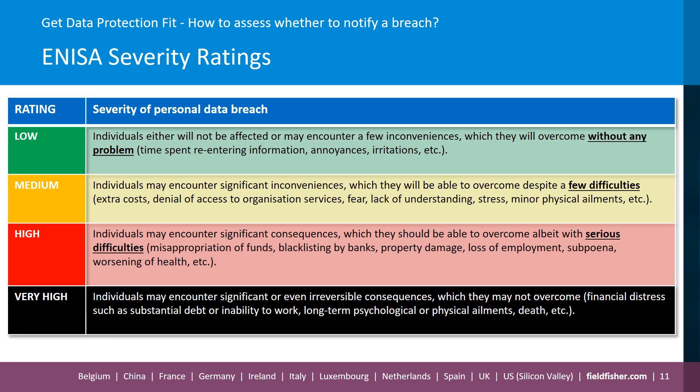The ENISA guidance sets out its ratings in quite a robust way with a risk-based approach. Their lowest rating is low — not completely no risk to data subjects. The descriptions that ENISA gives alongside ratings are useful: at the low end, individuals will encounter a few inconveniences which they will overcome without any problem — essentially annoyance and irritation. At the very high end, you have some really severe consequences for data subjects. Using the low, medium, high, and very high ratings gives a good idea as to whether an incident is notifiable.